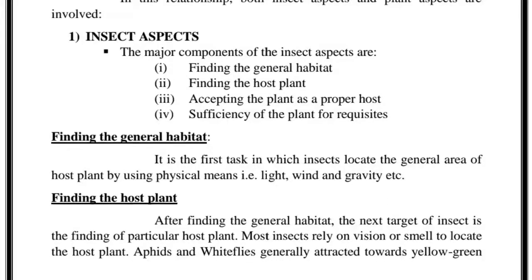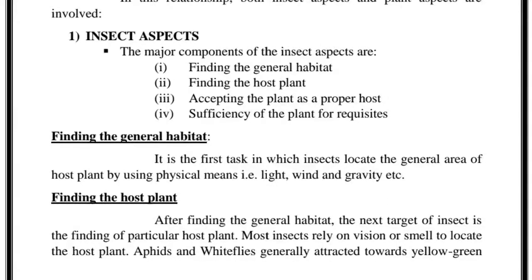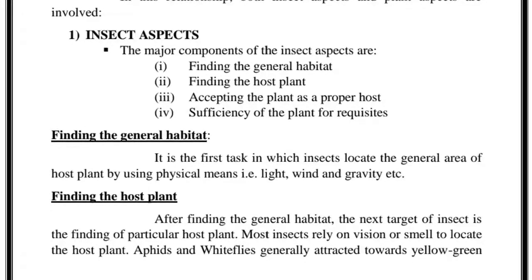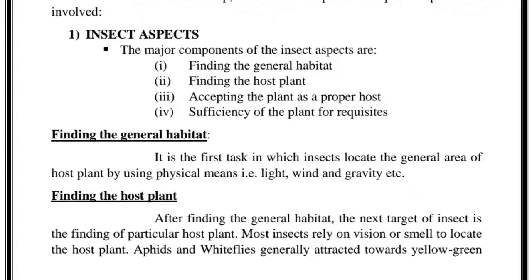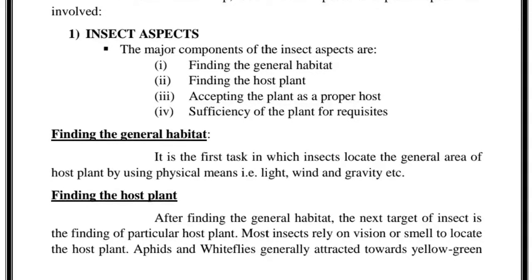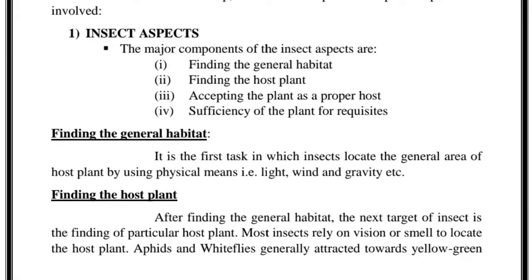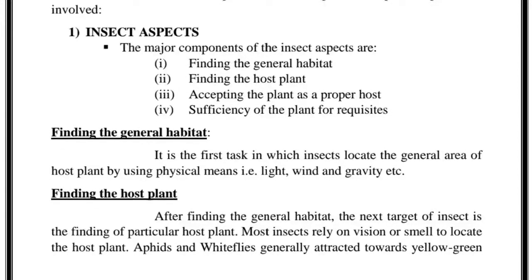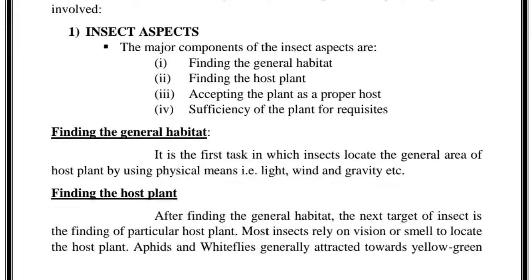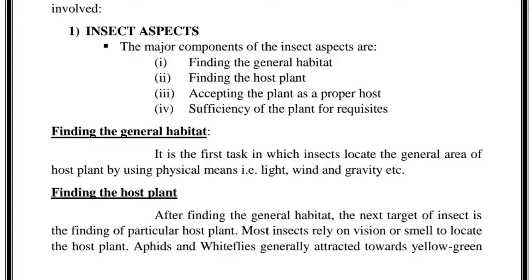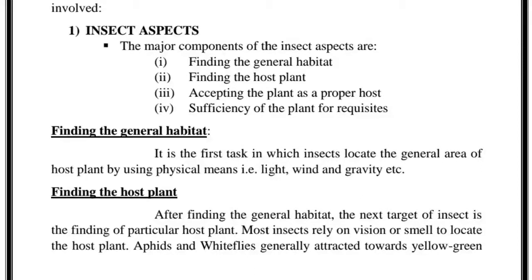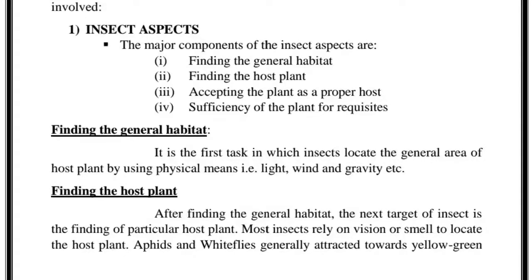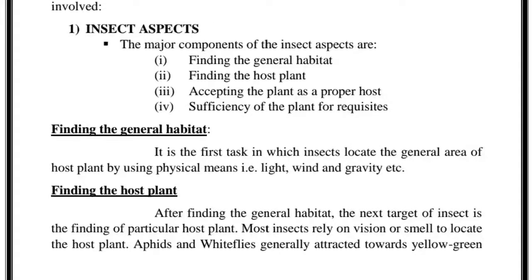Insects use their vision and smell to locate their host plant. Consider thrips flying upon a certain habitat — how can they locate their host plant? Because they don't have the kind of eyes that we have; they see everything in the form of different color wavelengths. For example, thrips flying over a crop first check whether that particular crop has a particular wavelength from 500 to 700 nm, and they use that vision to locate the host with the help of that wavelength.